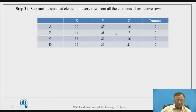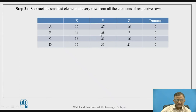Once balanced, we apply the Hungarian method to identify the smallest element in each row, since our target is to assign the smallest time element. Here, every row already has a zero, which is the smallest element. Therefore, subtracting the smallest element from all elements in each row leaves the matrix unchanged. The first step of subtracting the smallest element row-wise results in the same matrix.